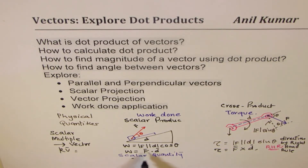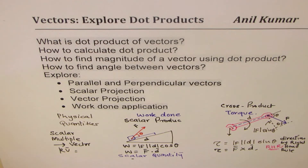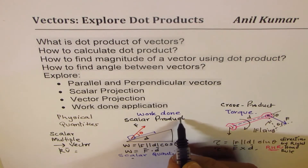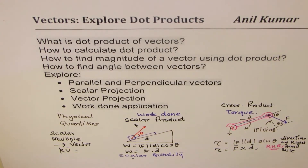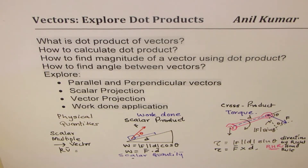In the dot product, both vectors get multiplied along with the cosine of the angle between them. We have these two types of products — dot product and cross product — mainly to explain physical quantities, and they are also very useful for understanding equations of lines, planes, circles, and so on. The whole of physics can be developed based on vectors.